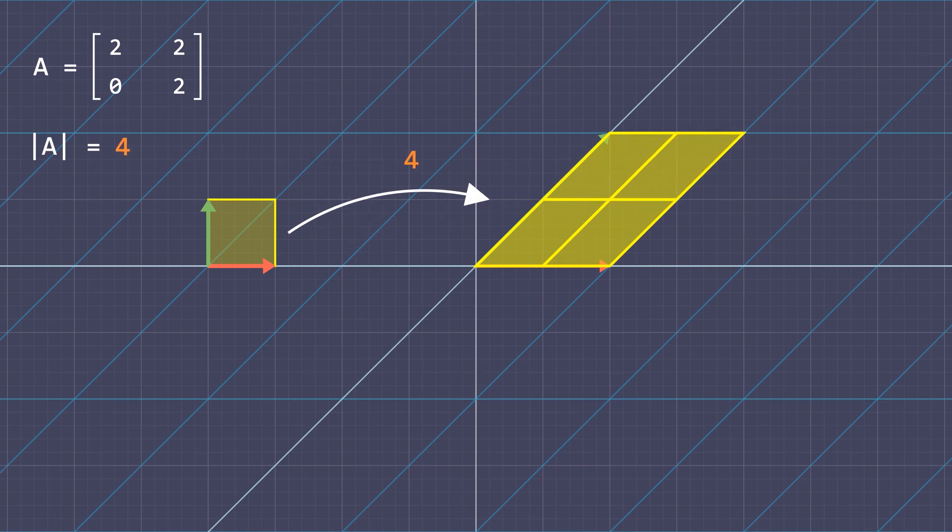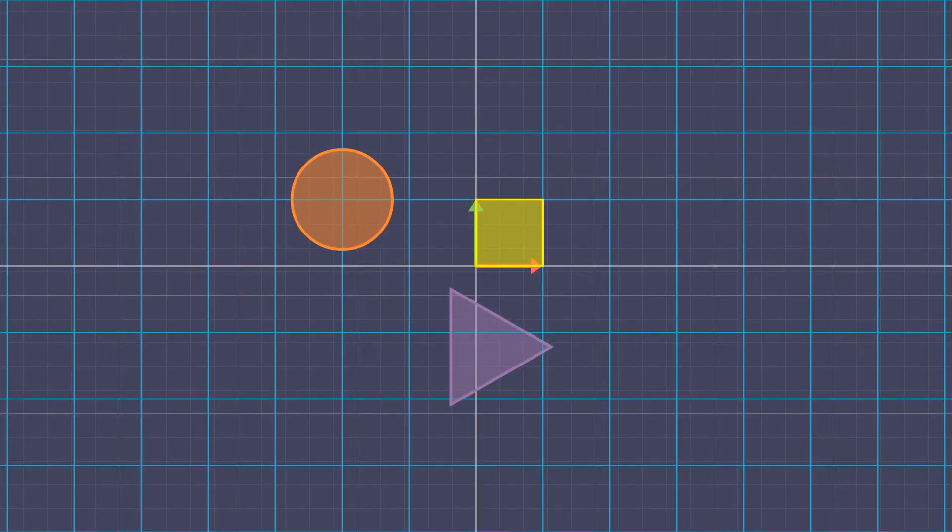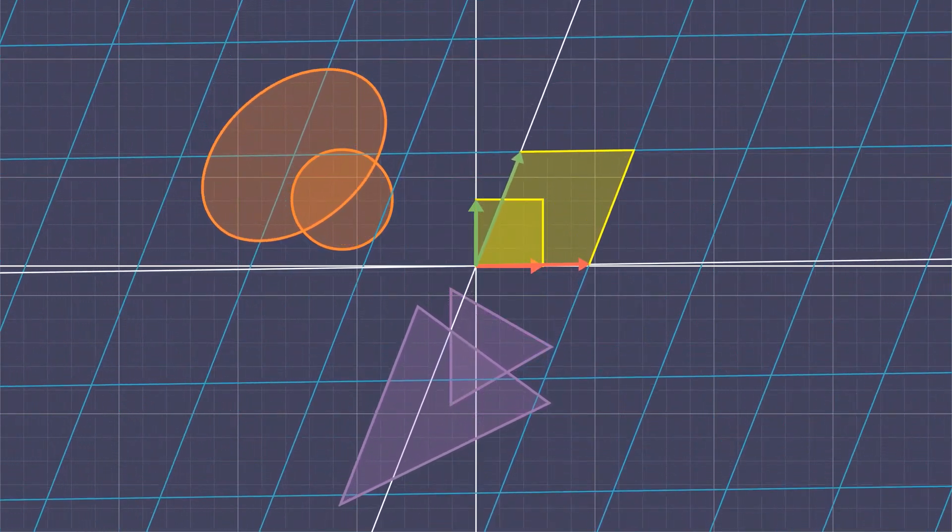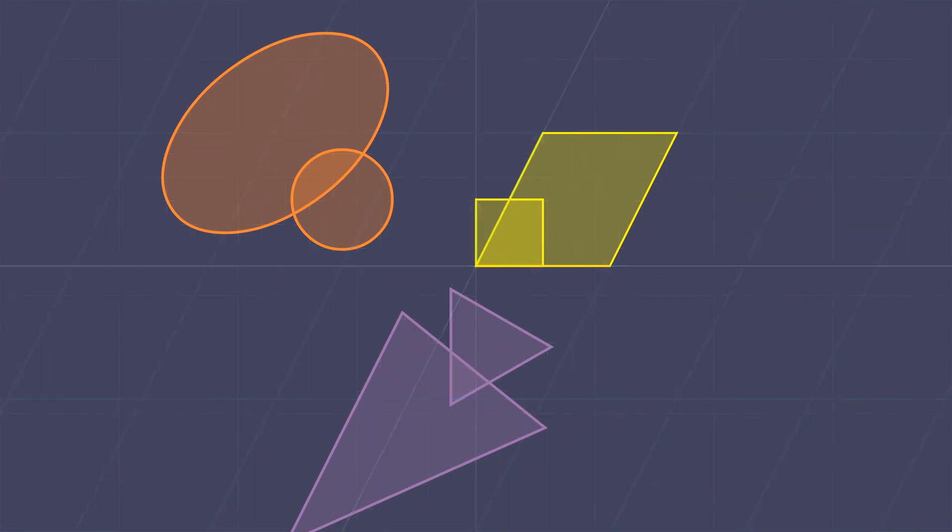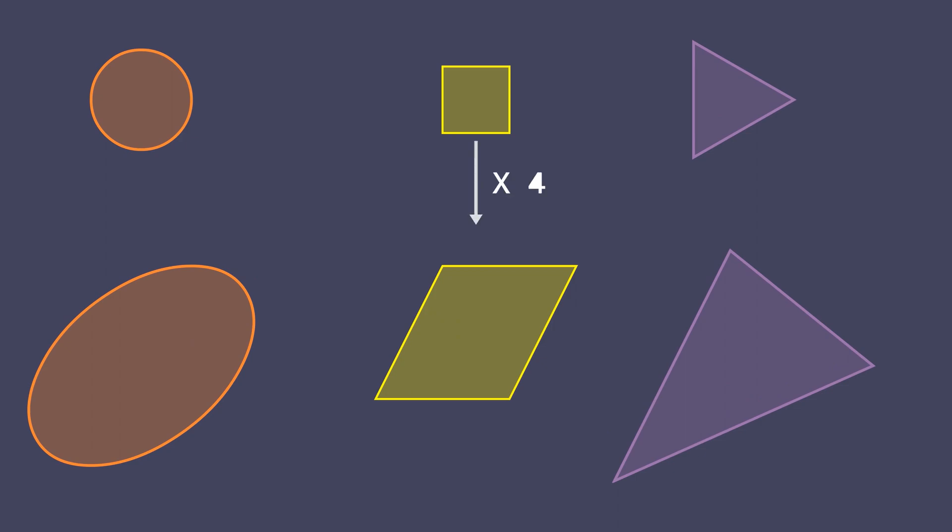A key feature of linear transformation is that it scales areas evenly throughout the space. That is whatever happens to that unit area during the transformation happens to any other object in the space irrespective of its shape and size. We use the same matrix A with determinant 4 and scale each object in the space by a factor of 4.